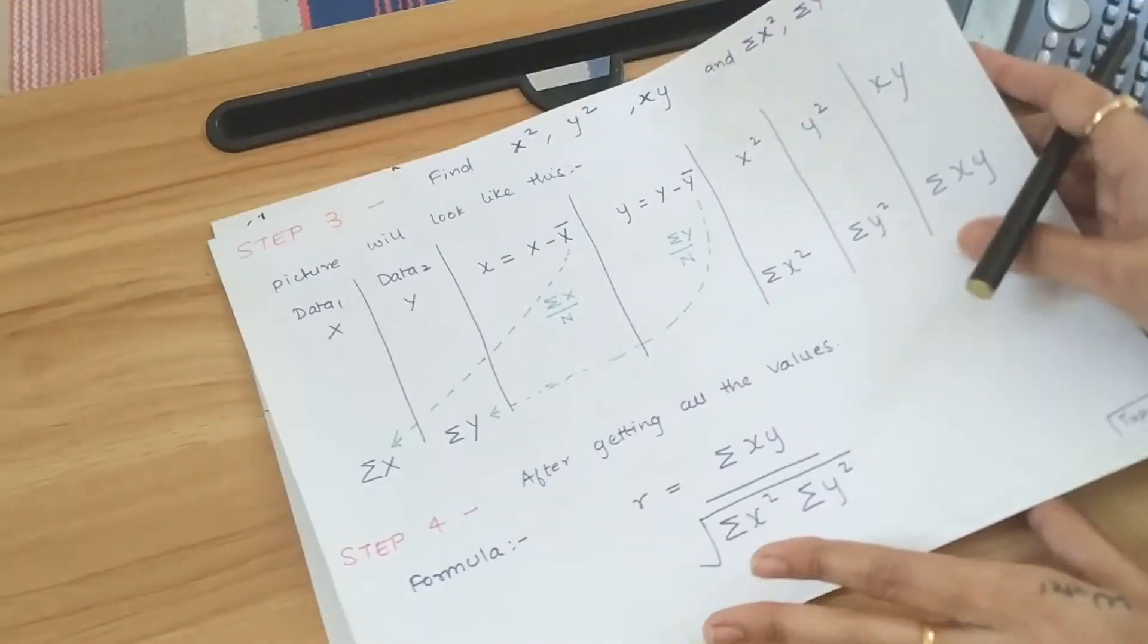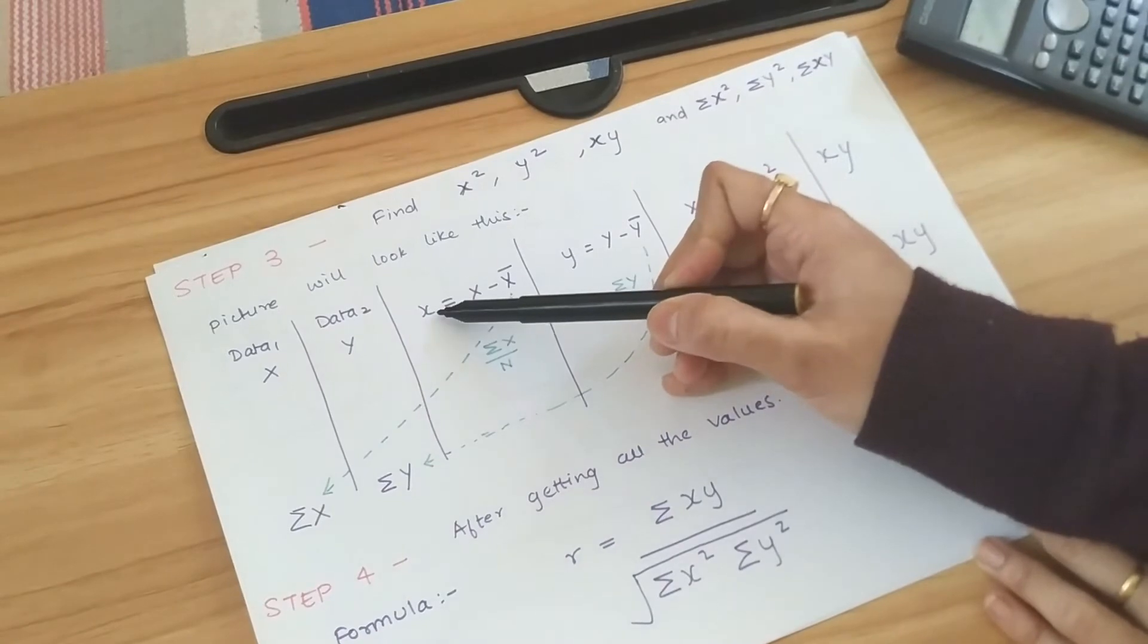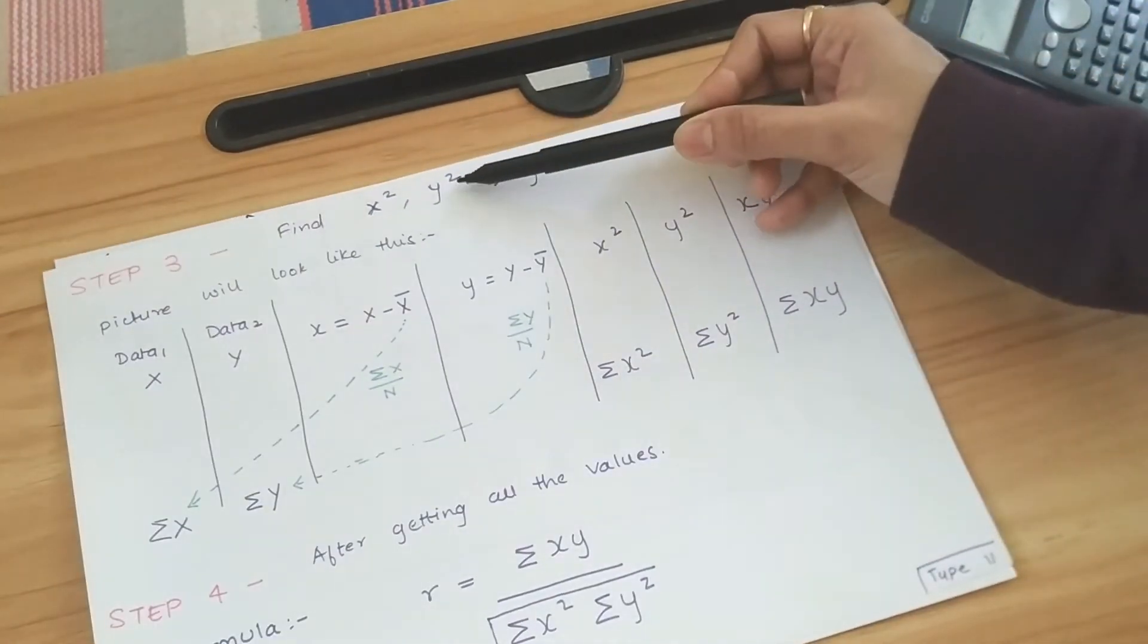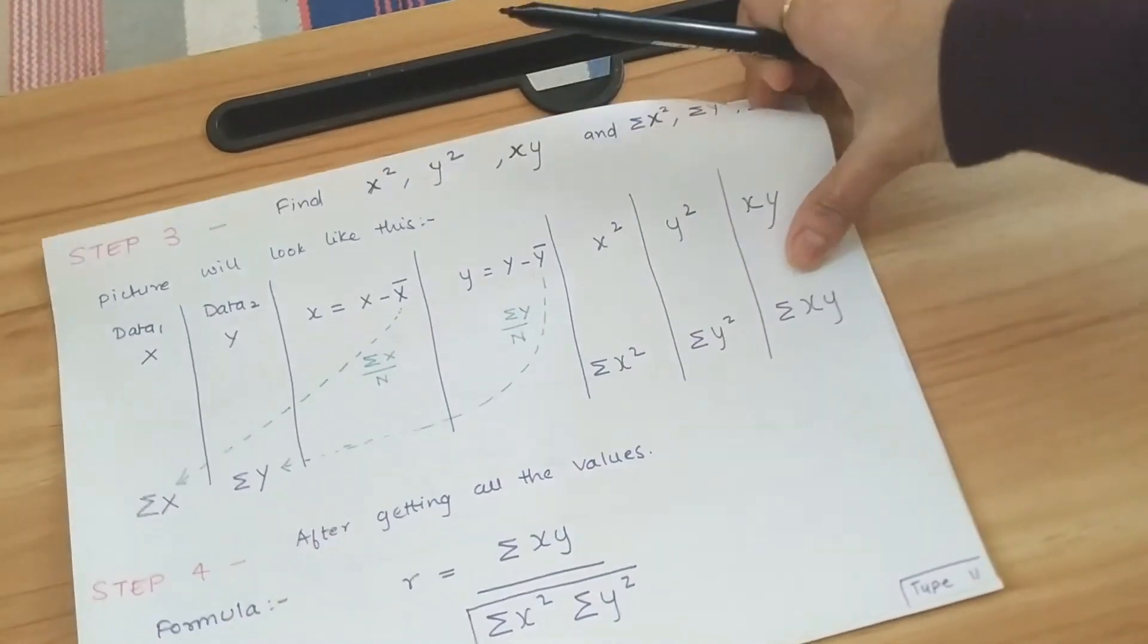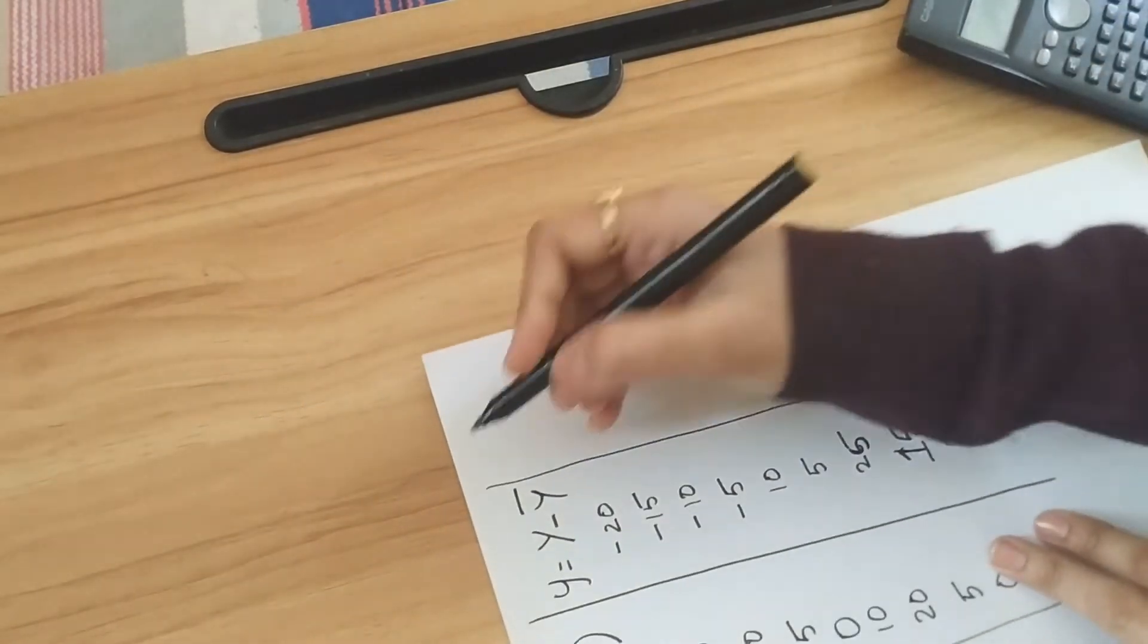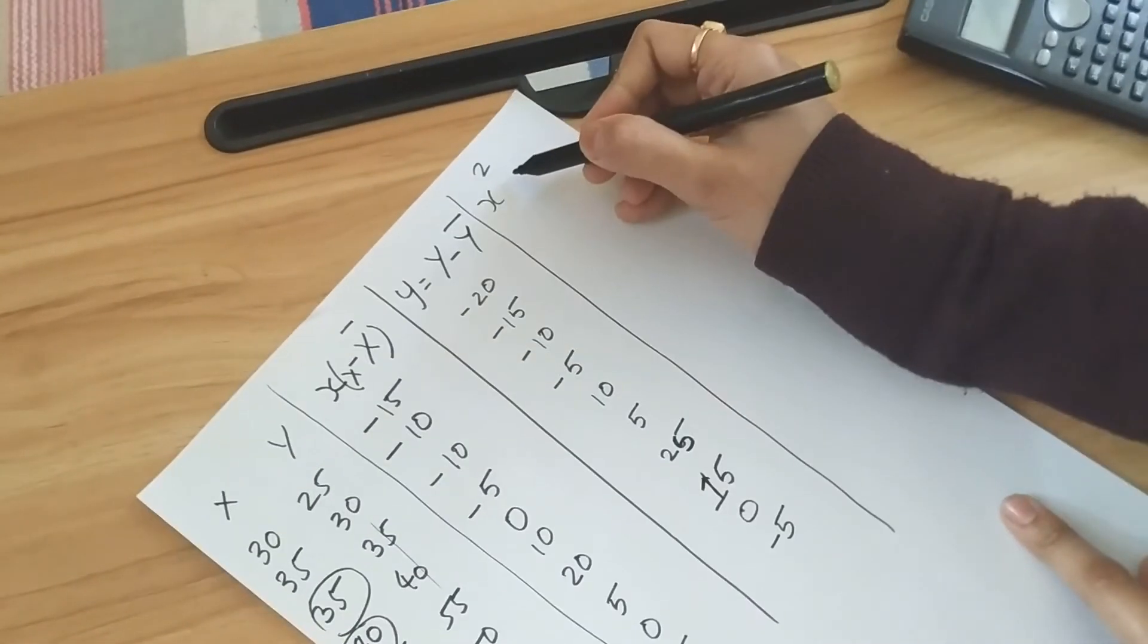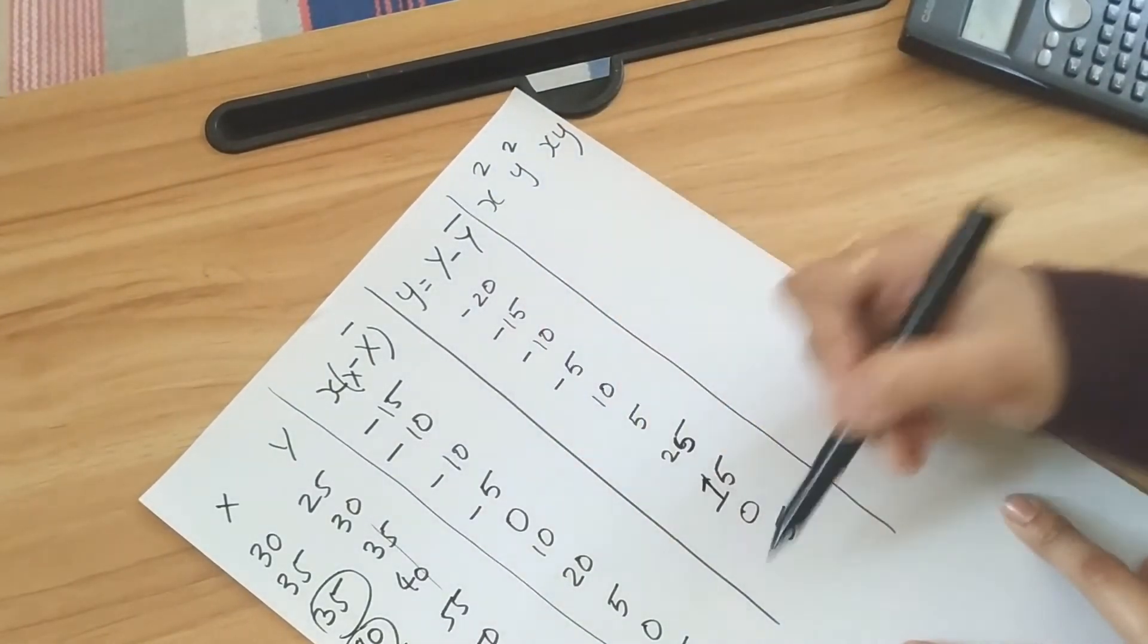Now if you see the PDF I have written here find x square. Now after finding x we have to find x square, then y square and x into y. Let's do that. So this is x square, this is y square and x into y. So let's find out each value.